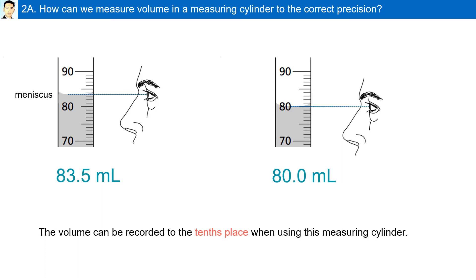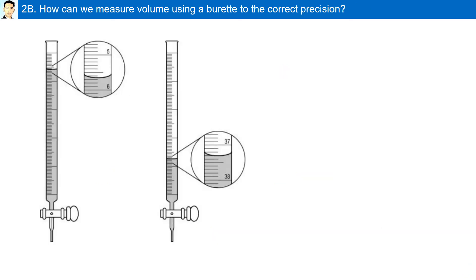The volume can be recorded to the tenth place when using this measuring cylinder. How can we measure volume using a burette to the correct precision? In a burette, a liquid is released, therefore we need to read from the top down. For example, the graduation mark is 5 and as you go down it goes to 6. In this example, the meniscus is between 5.6 and 5.7 milliliters. We can estimate one beyond 5.6; the answer is 5.65 milliliters. A misconception would be to read the volume as 6.35 milliliters — we must read from the top down, not the bottom up. This burette can measure volume to the hundredth place.